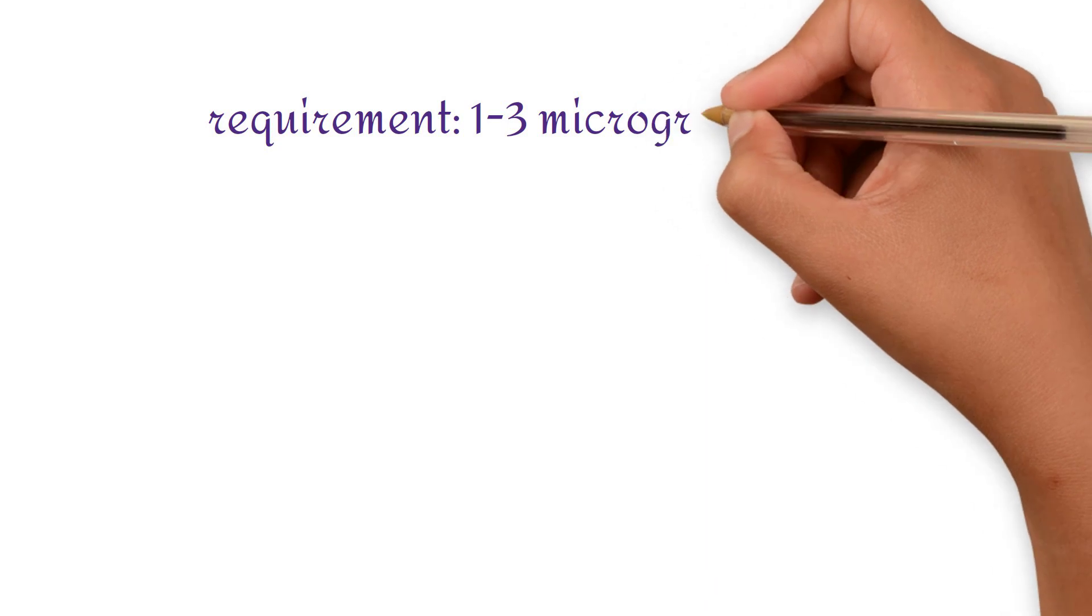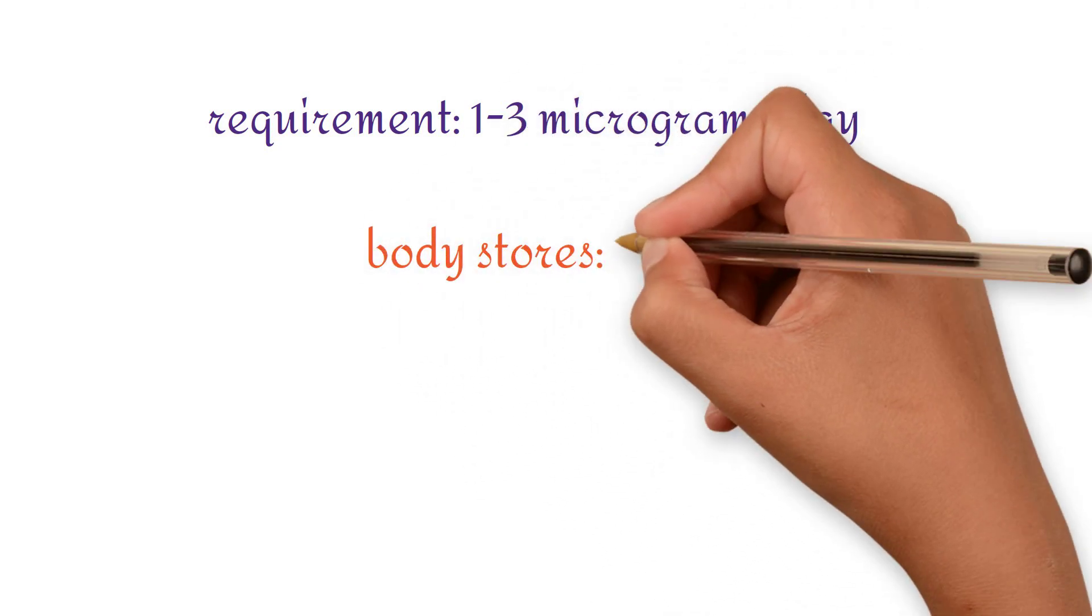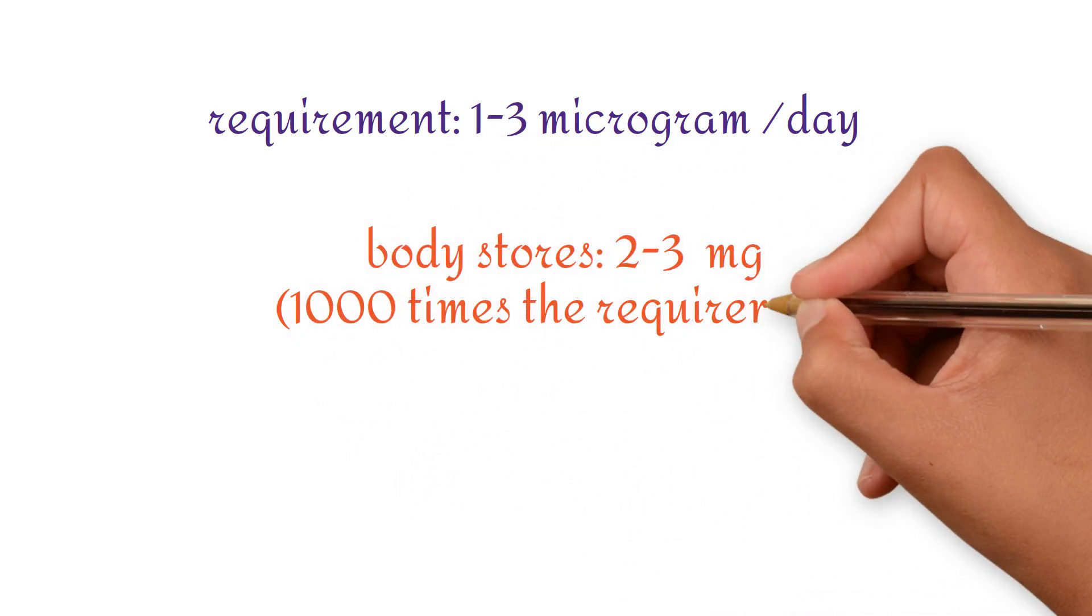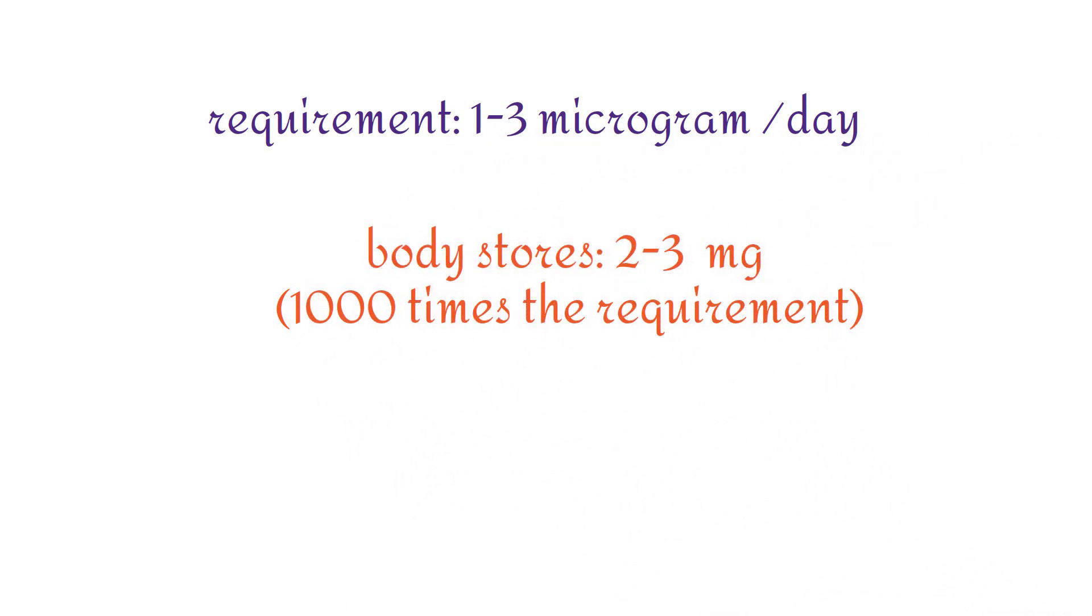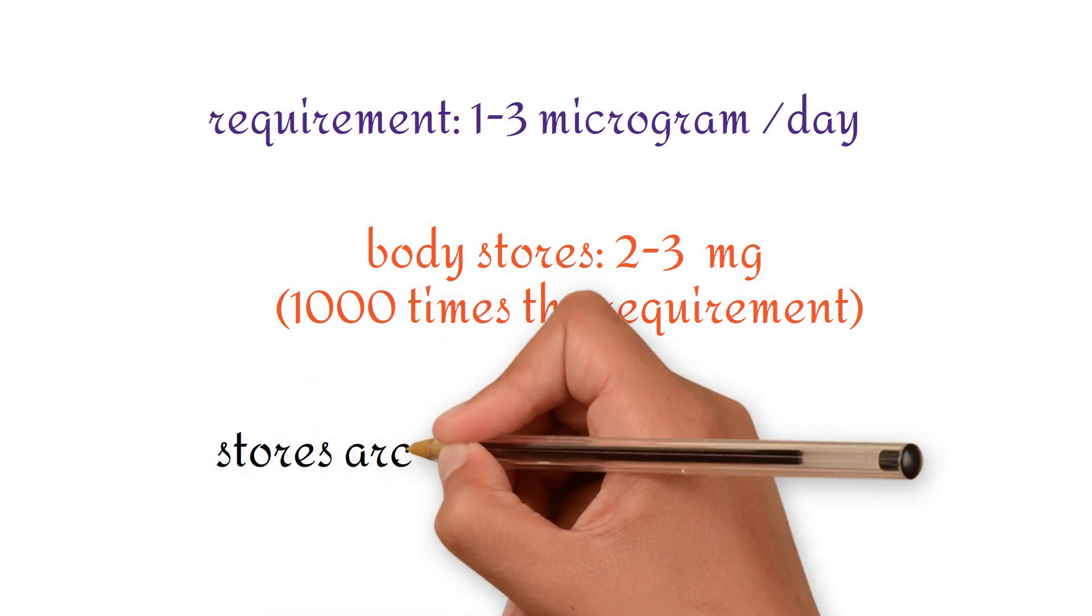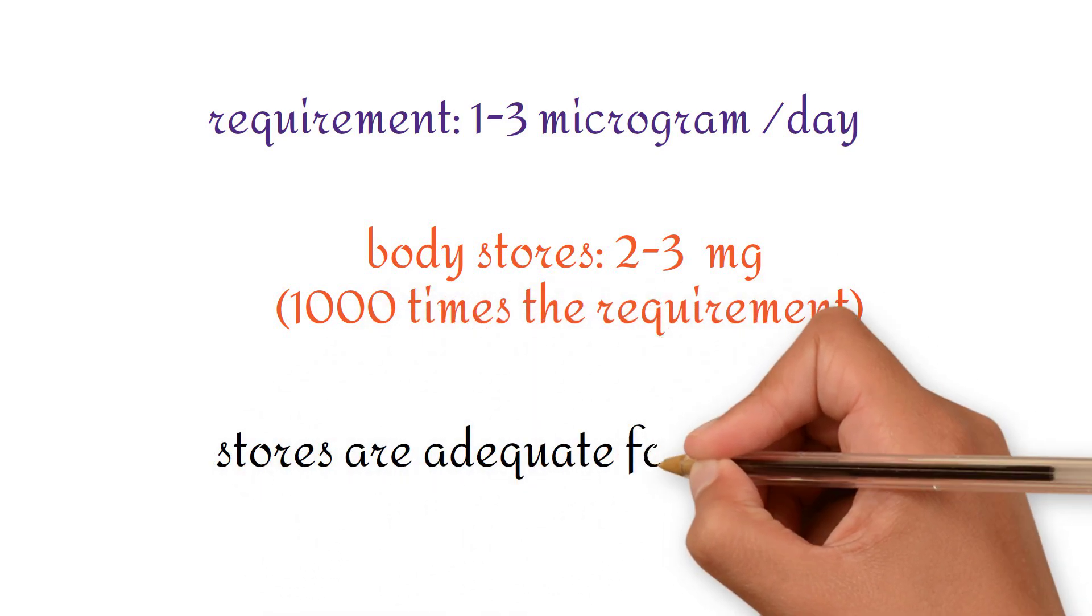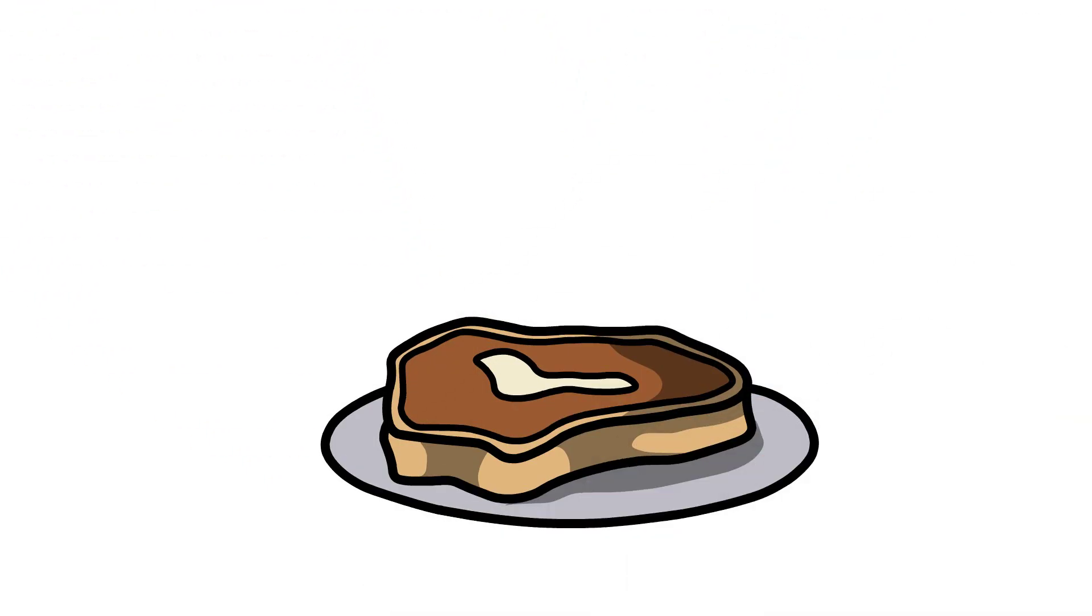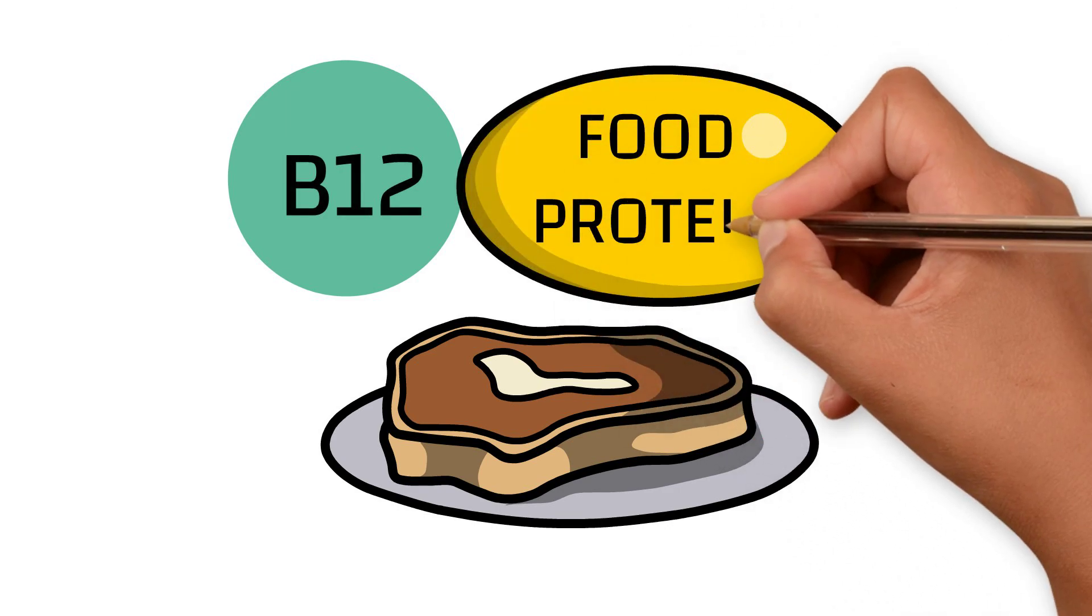B12 requirement is about 1 to 3 micrograms per day, but body stores are about 2 to 3 milligrams—that is, a thousand times the daily requirement. So even if diet is deficient in B12, stores are adequate for roughly about a thousand days, that is 3 years. In food, B12 is food protein-bound.